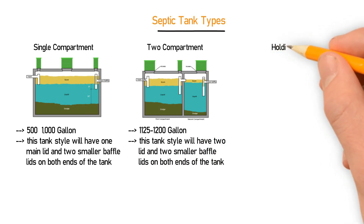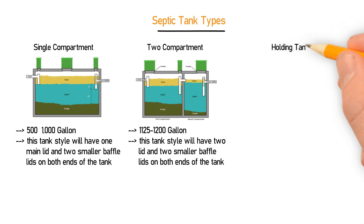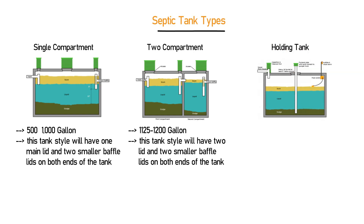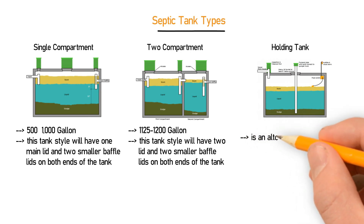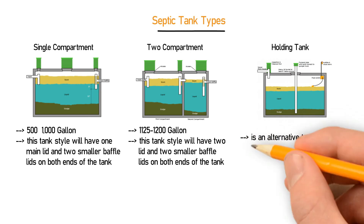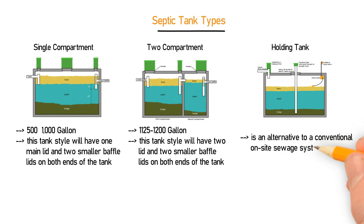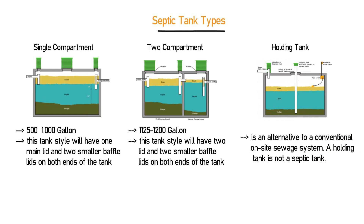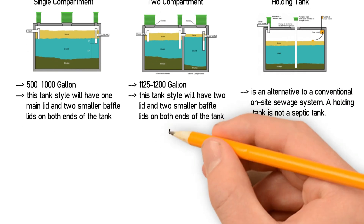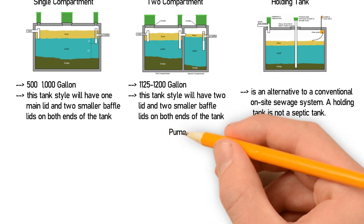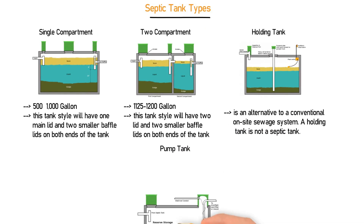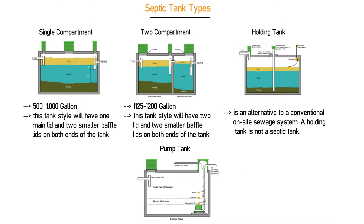The next type is the holding tank. Holding tanks are used as an alternative to a conventional on-site sewage system. A holding tank is not a septic tank — this is a common misconception. The last type is the pump tank.